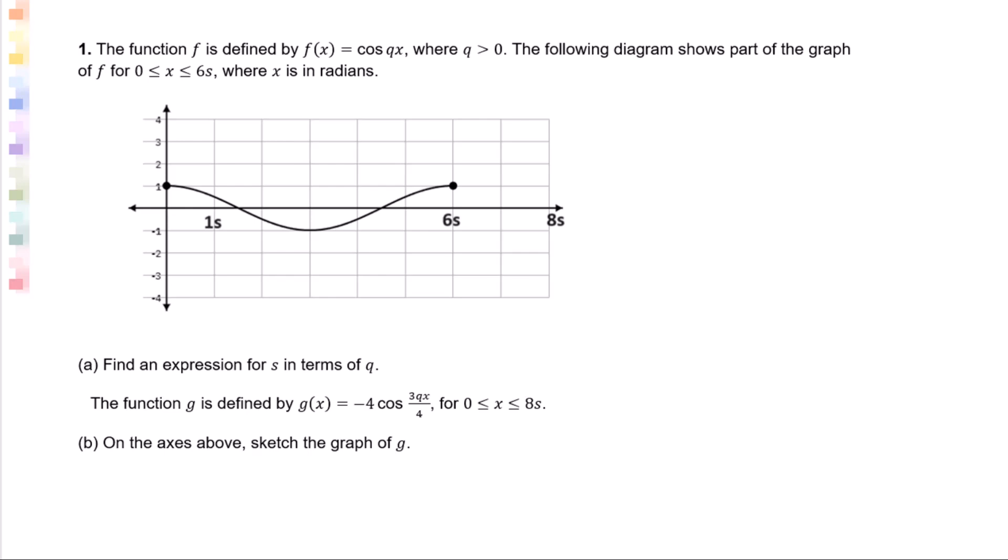The function f is defined by f(x) = cos(qx), where q > 0. The following diagram shows part of the graph of f for 0 ≤ x ≤ 6s, where x is in radians.